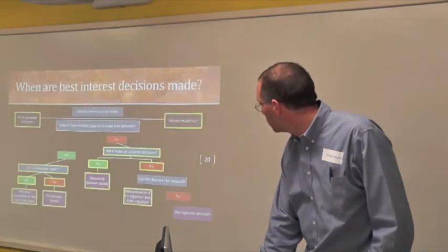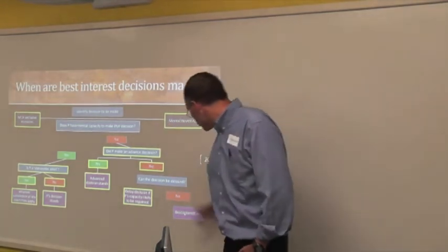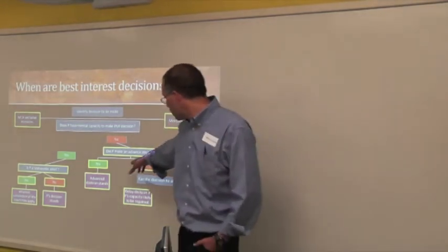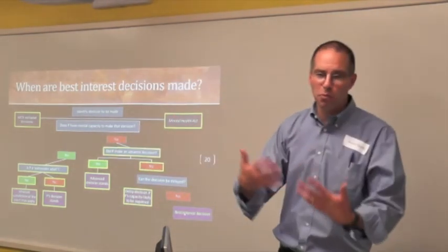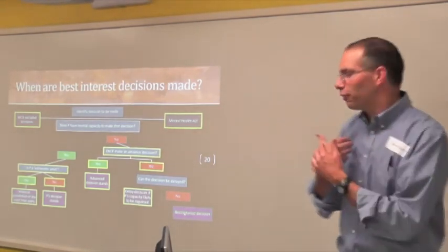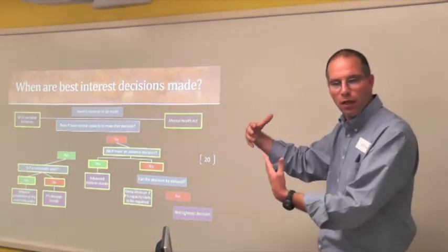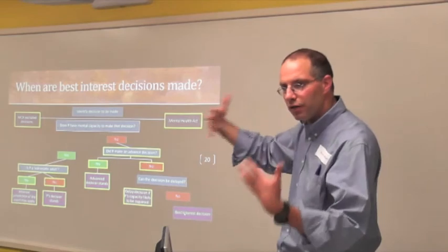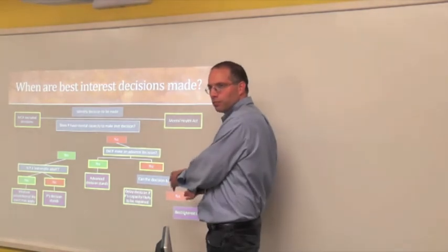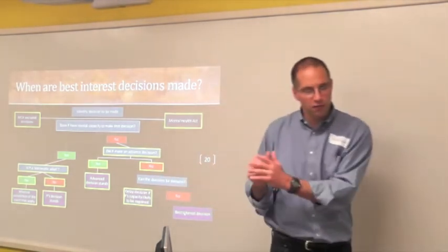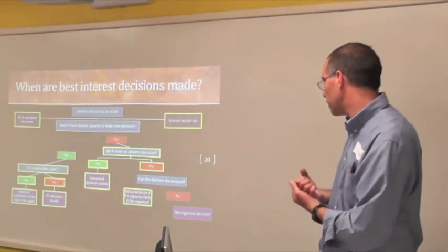On the no side, we've already seen this route to best interest, but there are other routes here as well. Suppose the person has an advanced decision. If it's valid and applicable, and it hardly ever happens, but it is recognized by statute. Best interest beneficence is intrinsic to the care relationship, but law is really boxing it up in this one particular domain and confining it, trying to confine it there, and there's all sorts of ways in which you might never get there.